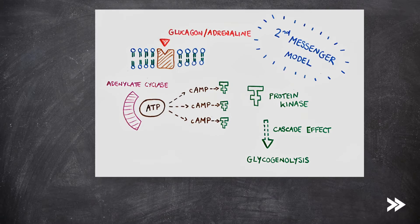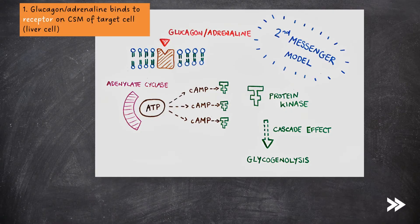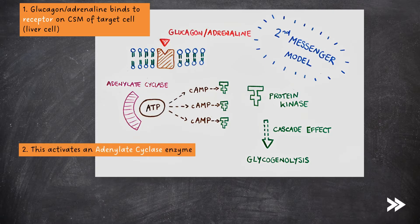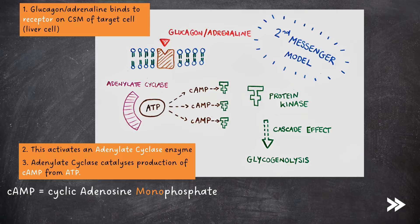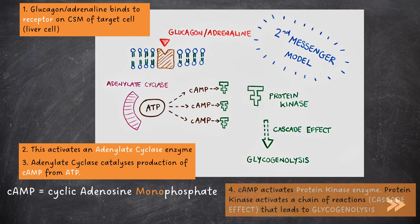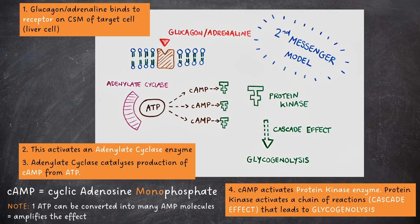Next, we need to know about the second messenger model, which explains the action of glucagon and adrenaline in restoring the concentration of blood glucose back to its normal level. Glucagon or adrenaline bind to receptors on the cell surface membrane of the target cell, activating an adenylate cyclase enzyme. The adenylate cyclase catalyzes the production of cyclic AMP (cAMP) from ATP. Note that AMP stands for adenosine monophosphate, meaning it only contains one phosphate. The cyclic AMP then activates a protein kinase enzyme, which activates a chain of reactions known as the cascade effect that leads to glycogenolysis. Note that one ATP molecule can be converted into many cAMP molecules, amplifying the effect, so one hormone binding can have a large effect.